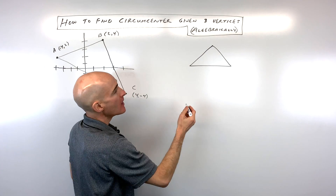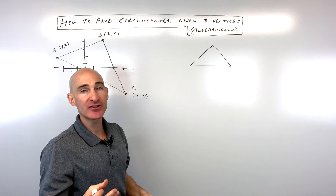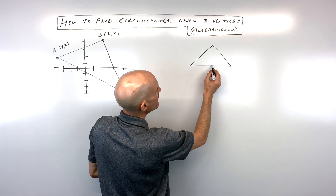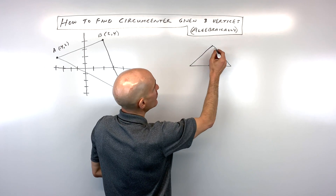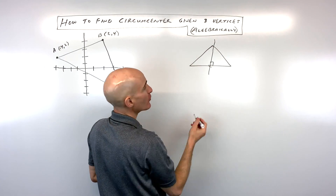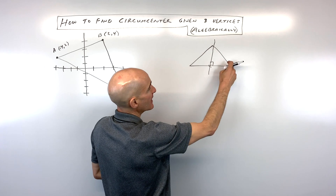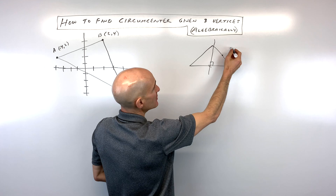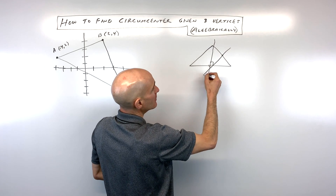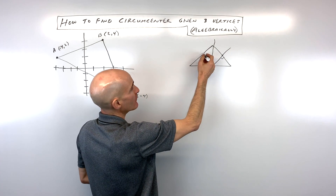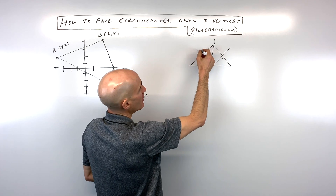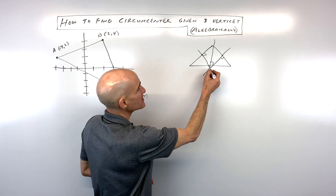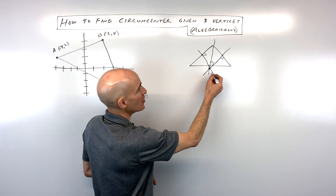To give you a rough idea, perpendicular means that it's at a right angle. Bisector means that it bisects or cuts the side in half. So for example, if we want to bisect the side right here, we'd have to find the midpoint and draw a line that's perpendicular, meaning at a right angle. Then we go to the other side of the triangle, find the midpoint again, and find the perpendicular to that side. Same thing with the third side — if we find the midpoint and draw a line that's perpendicular, they should all cross at the common point of intersection, which is called the circumcenter.